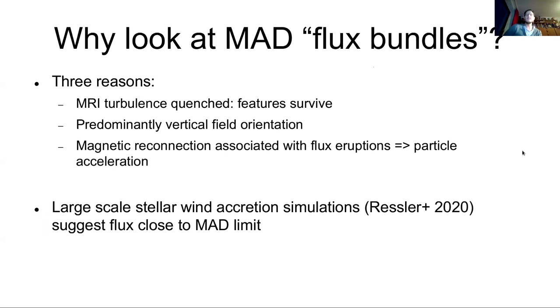They have this predominantly vertical orientation, which is nice to match polarization. And there's a claim that magnetic reconnection is also associated with the eruption process of these flux bundles, which would give you a nice package deal to have associated particle acceleration. Is the galactic center MAD? So is it in this really magnetically dominated state? I think the jury is still out there. Of course, we don't see a jet at the moment in the galactic center. Only when the galactic center flares spectrally, at least it looks like a jet.